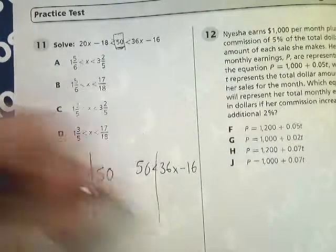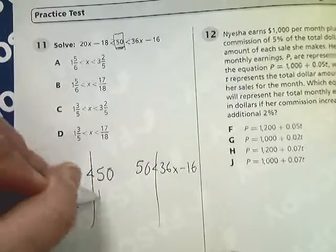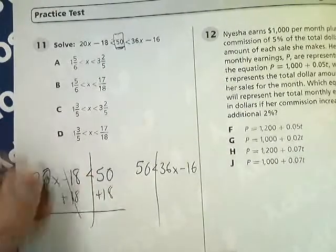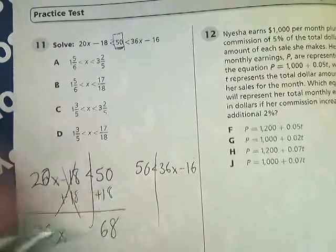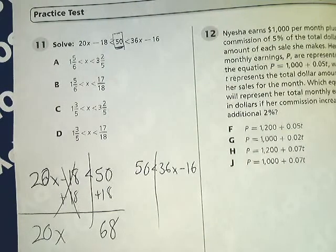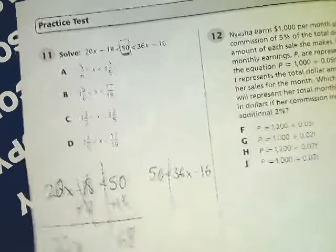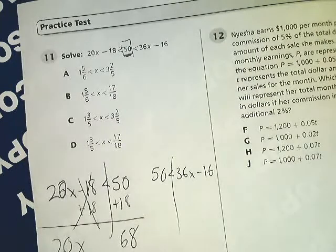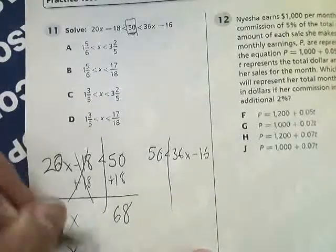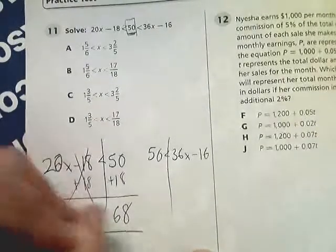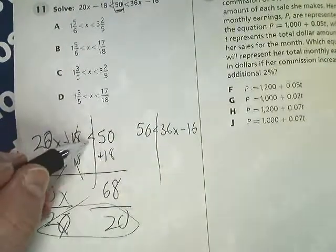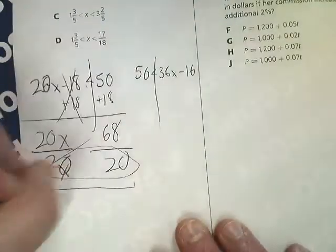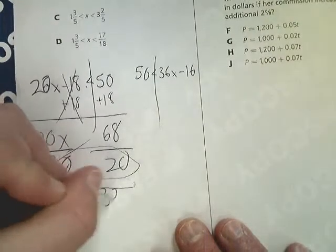And now I'm just going to solve them. Add 18 to both sides here because it's the furthest thing from x, 68. Then I'm going to do 68 divided by 20 gives me 3.4, but if I want to convert that into a fraction, that'd be 3 and 2 fifths. So x is, oh, divide by 20. Forgot a step there. And since I'm dividing by a positive number, I do not need to flip that over. So x is less than 3 and 2 fifths.